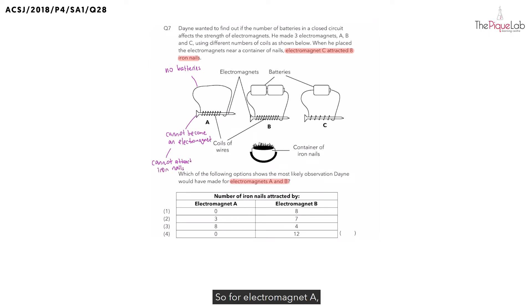So for electromagnet A, we know that it will attract zero iron nails in total. Looking at the options, which options can we cross out? We can cross out options two and three, which means only one and four are possible. Now, let's take a look at electromagnet B next.